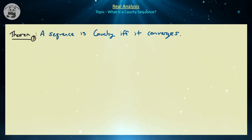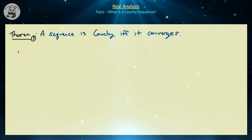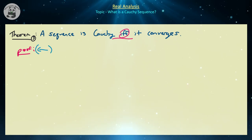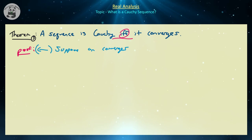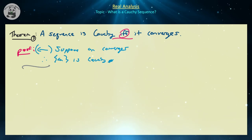Now we introduce the most important of the three theorems: a sequence is Cauchy if and only if it converges. If it converges, then it's Cauchy; if it's Cauchy, then it converges. This is a biconditional theorem, so we have to prove both directions. Let's first suppose that a_n converges — then we've already proven that a_n is Cauchy. That's the first theorem we investigated, so that direction is done.